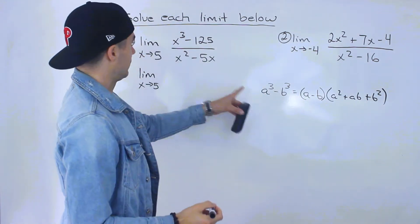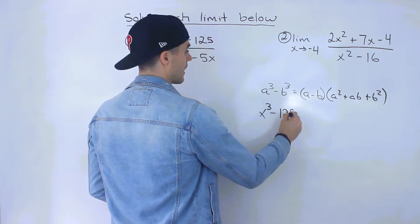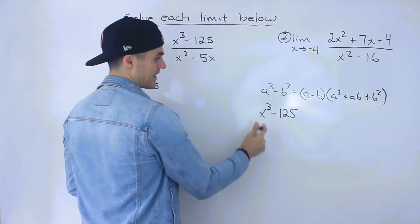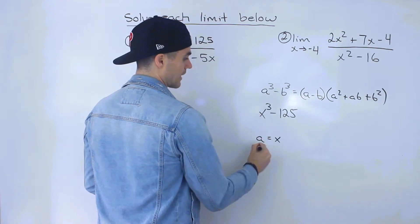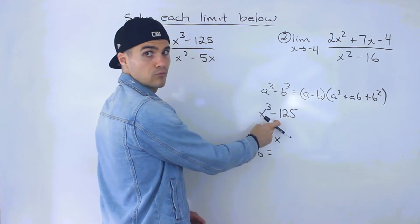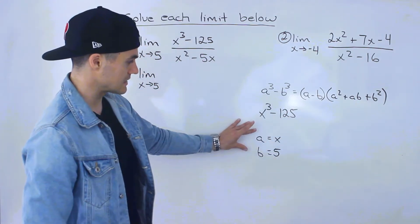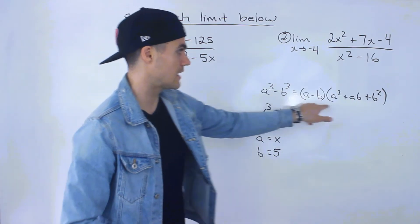So if we apply this here, notice we have x cubed minus 125. So notice that the a is going to equal x. And then what's b going to be? Well, notice b is going to be the third root of 125, which is 5. And then we can take these values for a and b and plug it in here.